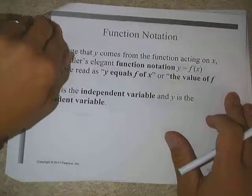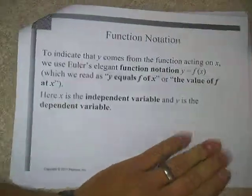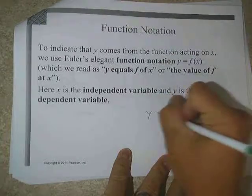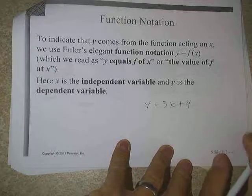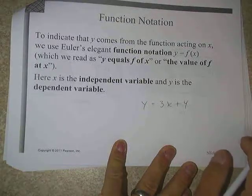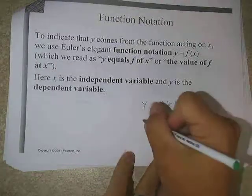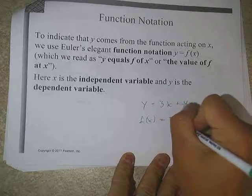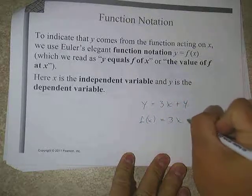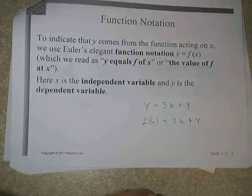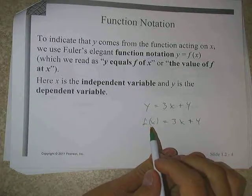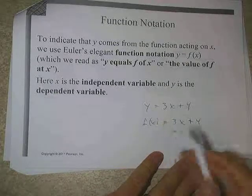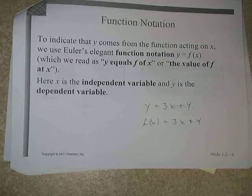We're going to look at function notation. In the past, we've studied linear functions. If we had y equals 3x plus 4, that's an equation for a line. In function notation, that would be defined as f of x equals 3x plus 4 — that's exactly how we read this symbol. Ultimately, y and f of x are essentially interchangeable.